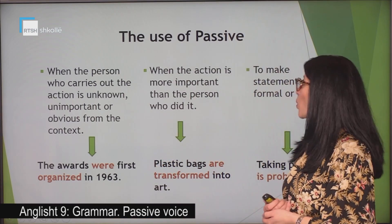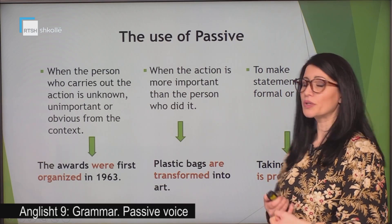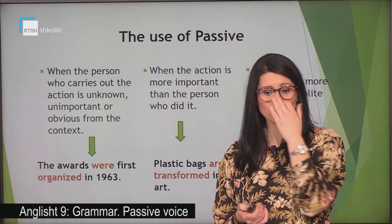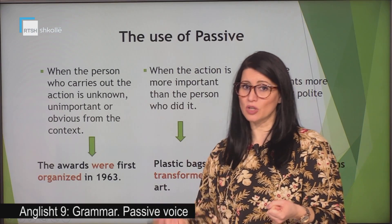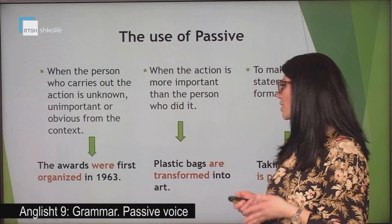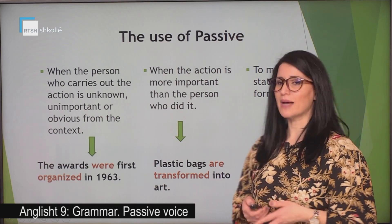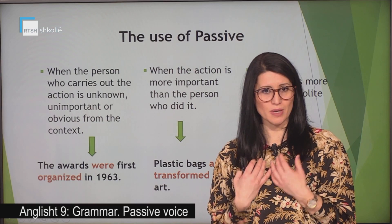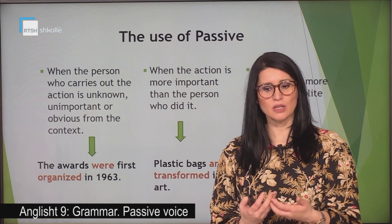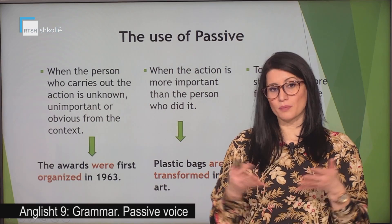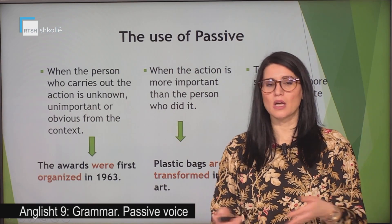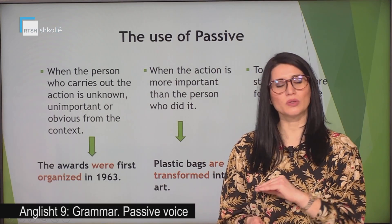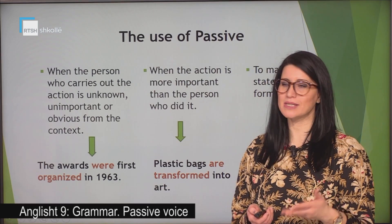Number two: when the action is more important than the person who did it. We use the passive when we want to emphasize the action and not the person who did it. For example: plastic bags are transformed into art. We are interested in the action — that we can use plastic bags to form art. We are not interested in who uses these plastic bags. That's why we do not include it in our sentence.